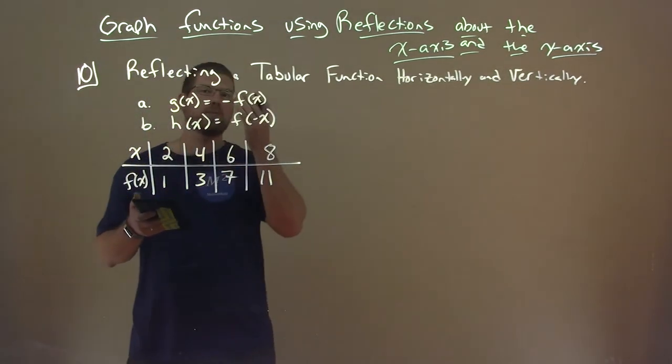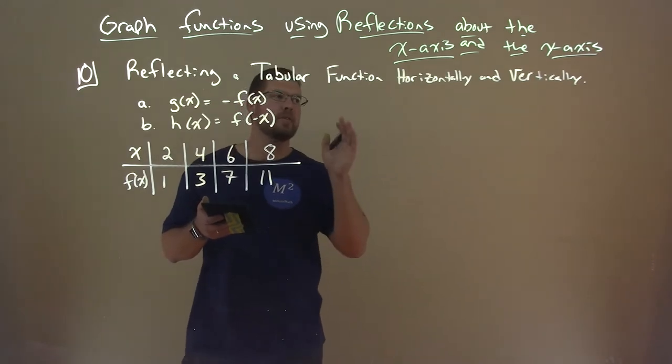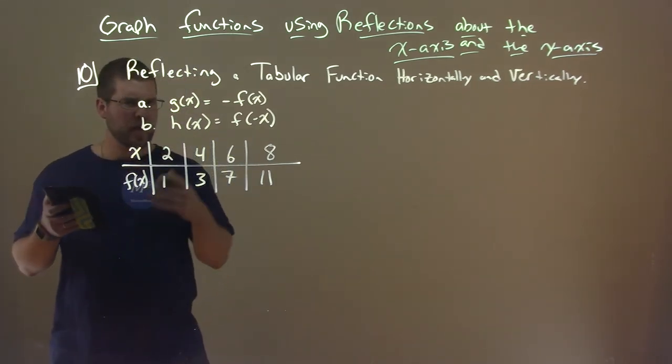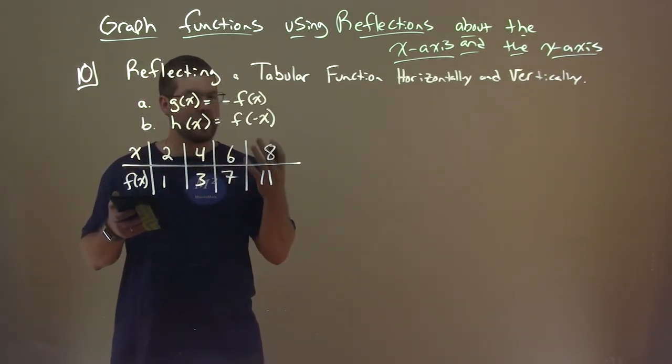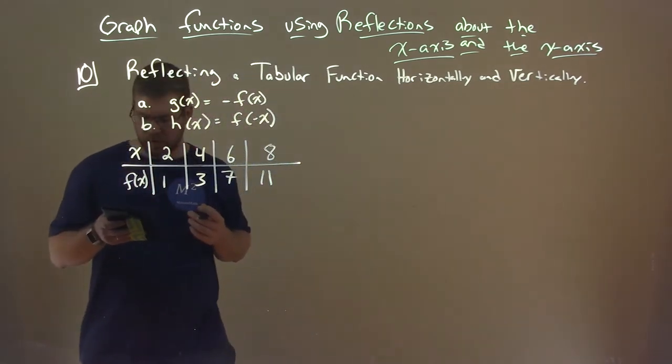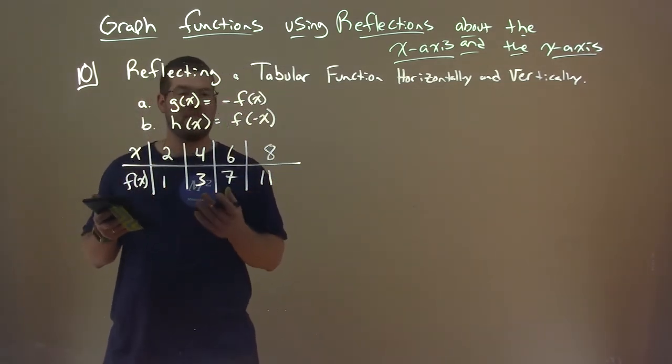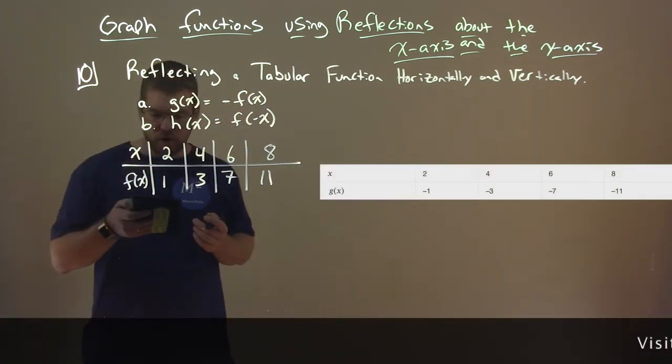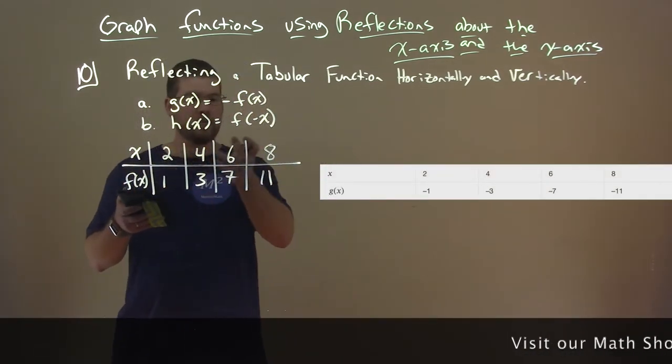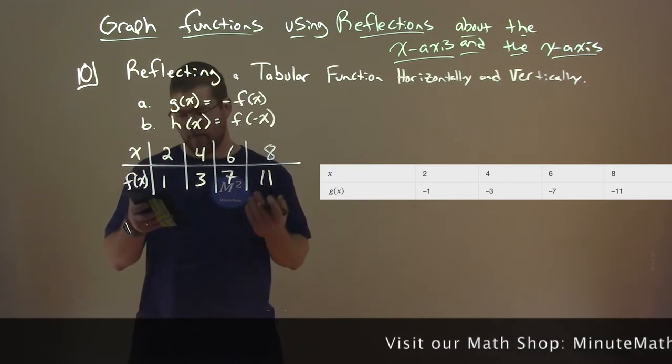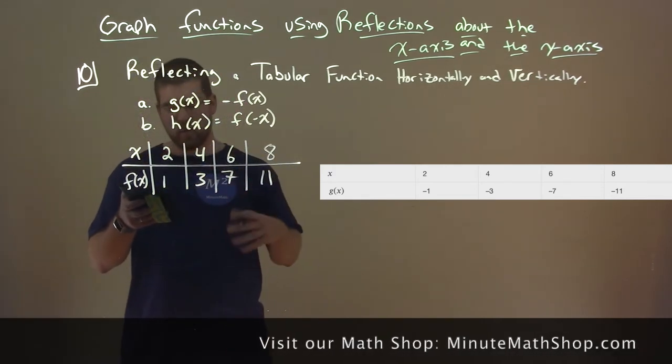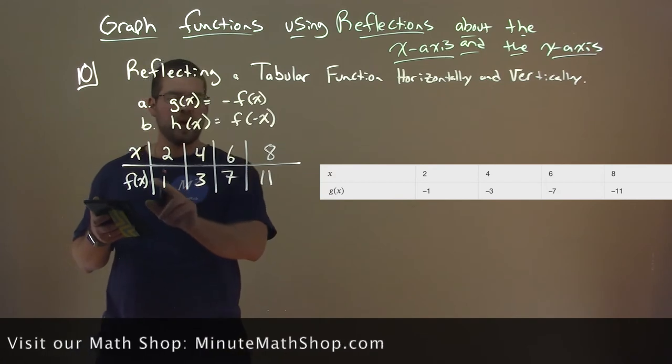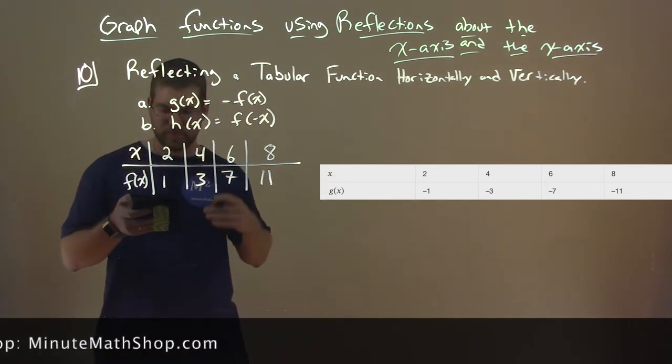So now we're going to learn about reflecting a tabular function horizontally and vertically. We have g of x. So we have a function f of x in this table right here, and we want to find a versus when g of x, find that table, is equal to negative f of x. All right? So what we want to do is we're going to take the output of f of x and really just put on a negative there and negate that. So we can see that in our table here. Notice there that our x values are the same, 2, 4, 6, and 8, but the negative f of x values, which is equal to g of x, is negative 1, negative 3, negative 7, and negative 11. The same here, right, same f of x values, but there's a negative added to each one of those.